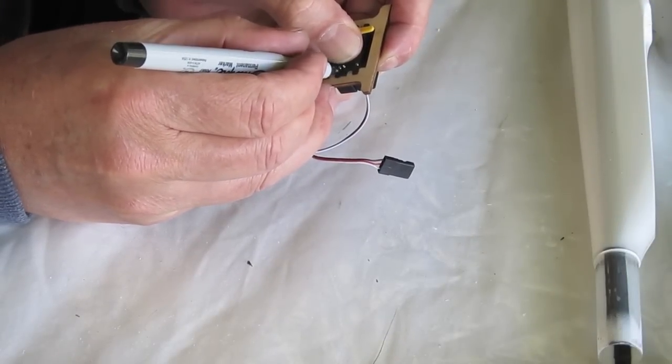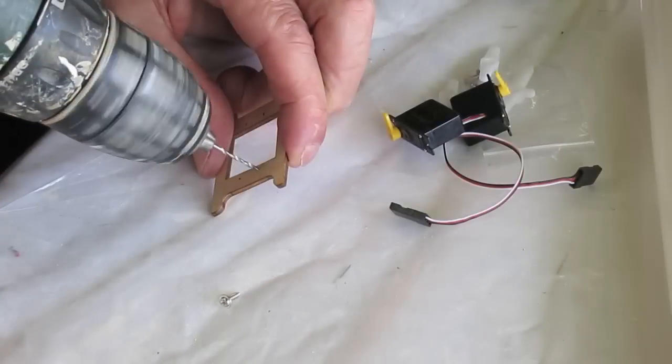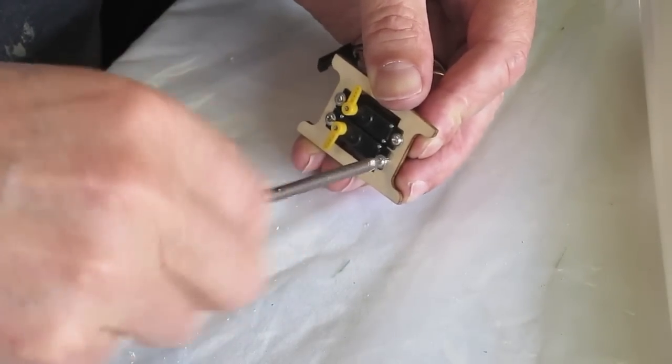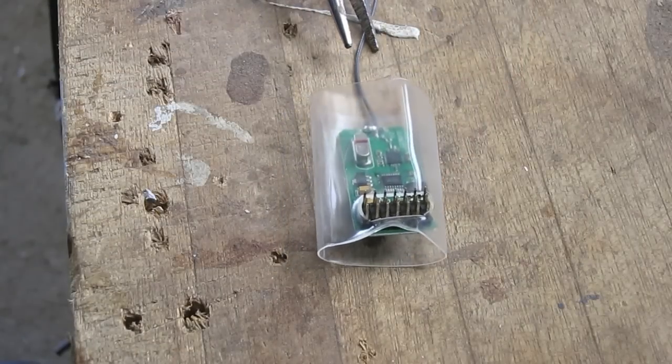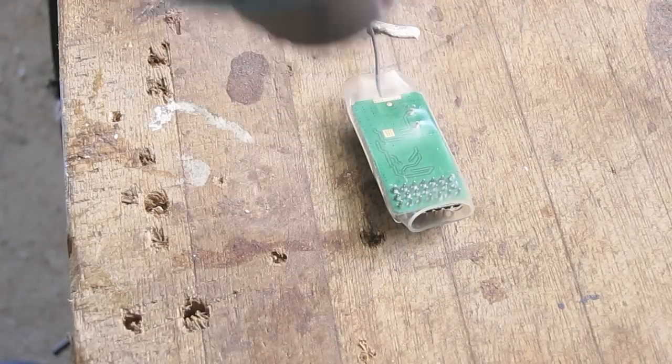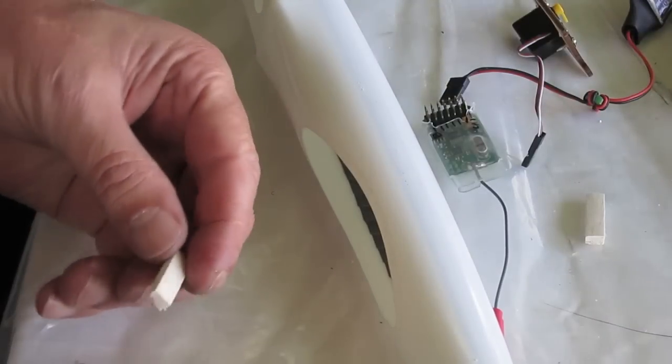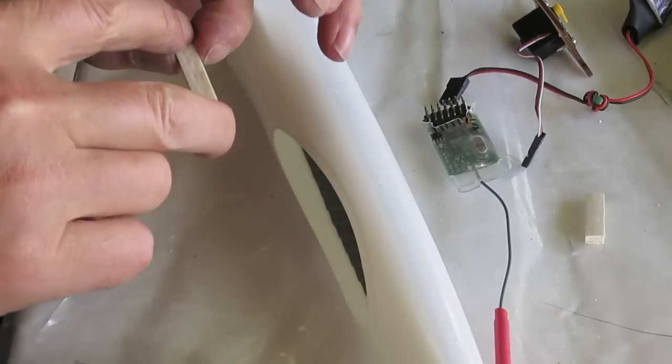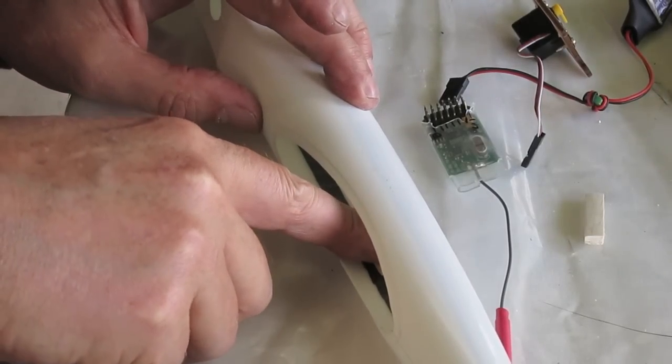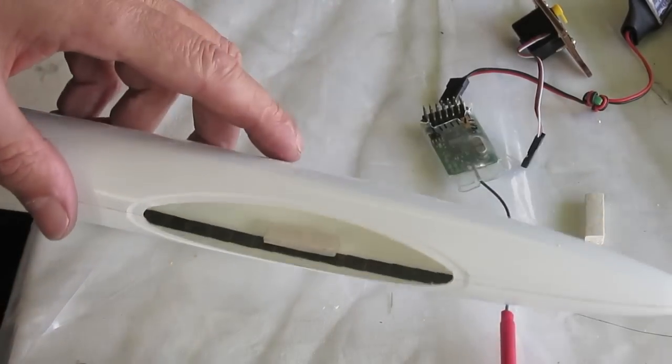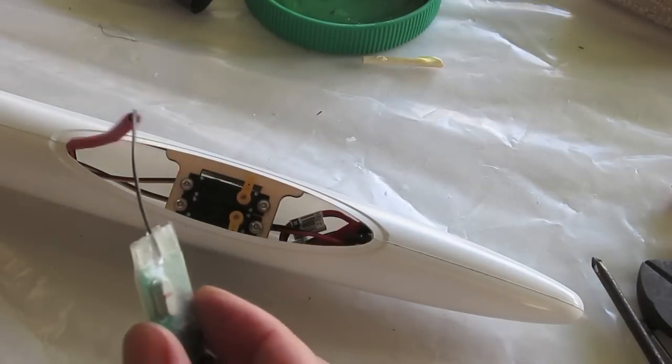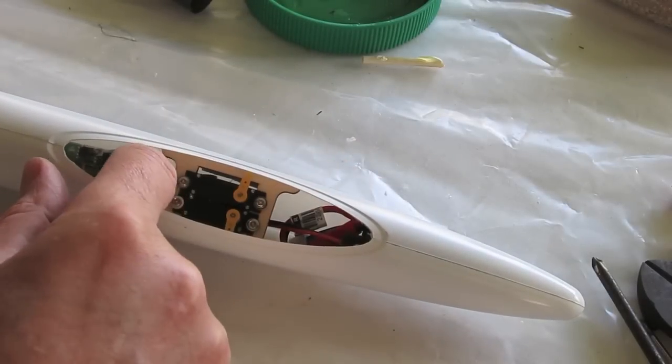Now I'm mounting the servos into the servo mounting tray. This Hobbyking receiver is too big to fit into the pod, so I removed the cover and replaced it with some heat shrink. Now I'm gluing in some supports for the servo tray and making sure everything fits in. You need quite a small battery to fit in the nose there.